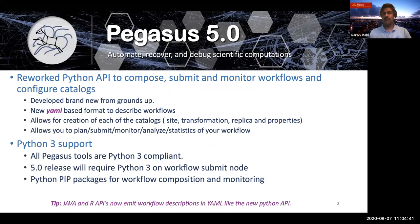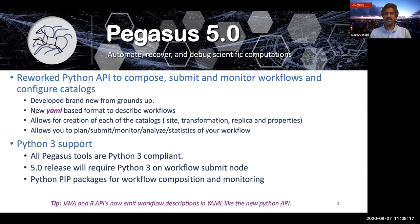One of the biggest changes affecting most Pegasus users is that with 5.0 we're releasing a totally reworked Python API to compose, submit, and monitor workflows, and configure all the catalogs that Pegasus refers to. This is not a patched-up Python API — it's been developed brand new from the ground up, and it also has a new YAML-based format to describe your workflows. The API takes care of creating each catalog Pegasus requires: the site catalog, transformation catalog, replica catalog, and user properties files. It will also allow you to plan, submit, monitor, analyze, and generate statistics of your workflow. We've wrapped the command line clients in Python to enable that.